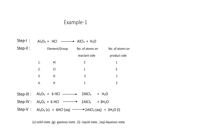In step five, we mention the physical states. Aluminium oxide is a solid (s). HCl is dissolved in water, so it is in aqueous state (aq). Aluminium chloride is also dissolved in water, so aqueous state (aq). Water is in liquid state (l).